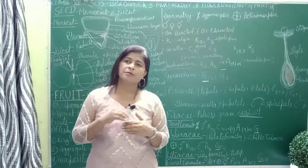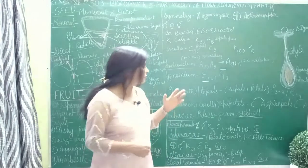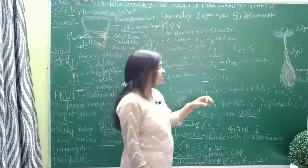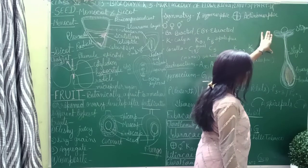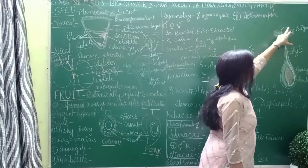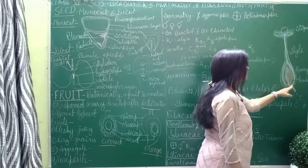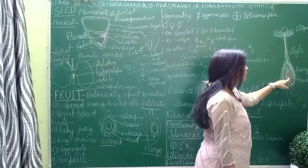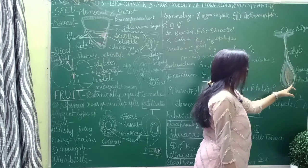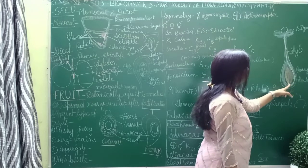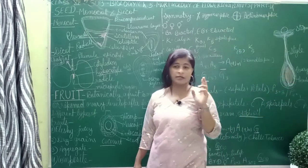According to the diagram, the stigma of the female reproductive part receives the pollen grain. We have seen that pollen grain is now present on the stigma, and as it continues, it comes out as the pollen tube. The pollen tube carries the male gametes into the ovule. This is why we have discussed many times that ovule converts into seeds.